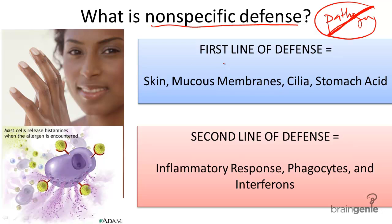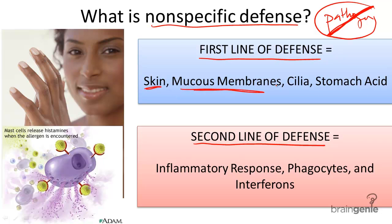There are two lines of defense in nonspecific defense. The first consists of barriers that help prevent pathogens from entering the body. They include skin, mucous membranes, cilia — the tiny hairs in the respiratory system that sweep out mucus — and stomach acid, which kills germs that enter the alimentary canal via the nose and mouth.